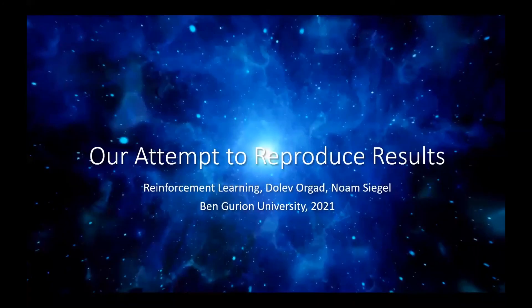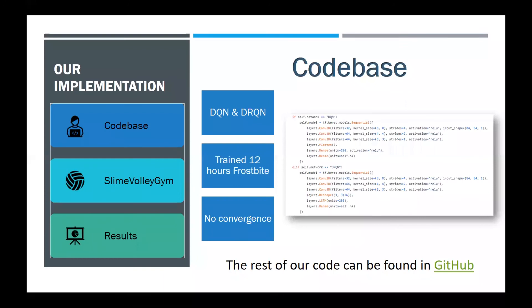We will now discuss our attempt to reproduce the results of the paper. Our code is written in Python and uses the Keras API. We implemented both networks, DQN and DRQN. Initially, we tried to train the agents on the Frostbite game, but realized there is not enough time with the compute resources to finish training. We decided to try a different environment.